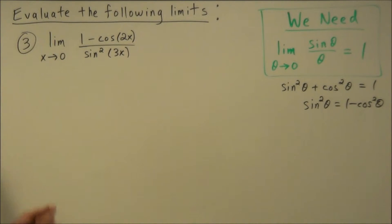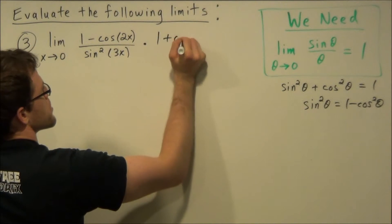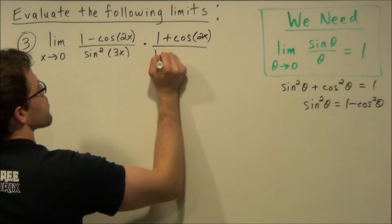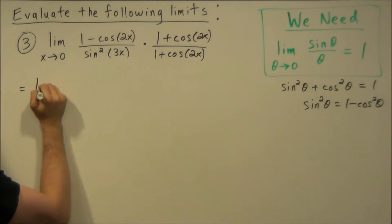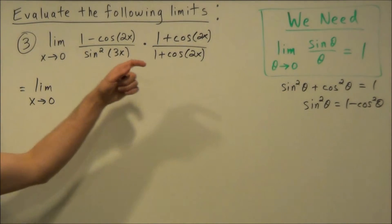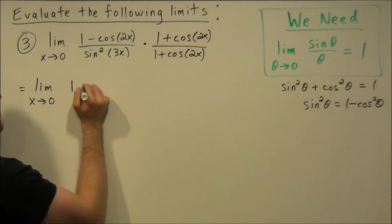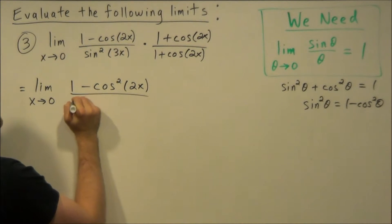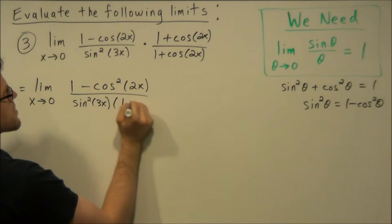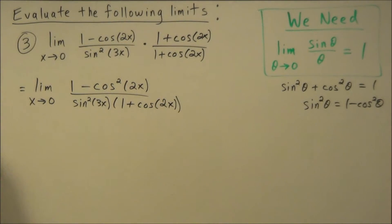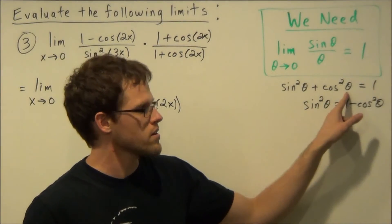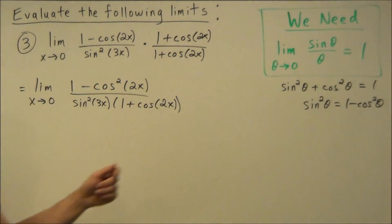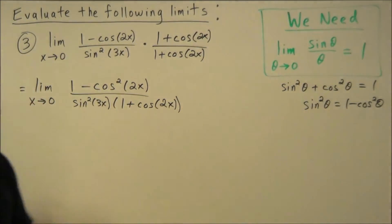For the last problem, we have the limit as x approaches zero of one minus cosine two x over sine squared three x. Plugging in zero gives zero over zero, which is indeterminate. So we multiply by the conjugate of the numerator: one plus cosine two x over one plus cosine two x. Using difference of squares, the numerator becomes one minus cosine squared two x. By the Pythagorean identity sine squared plus cosine squared equals one, we can replace this with sine squared two x, where theta is two x.